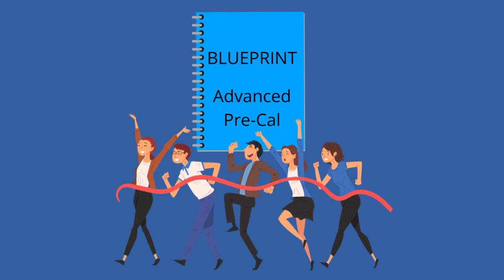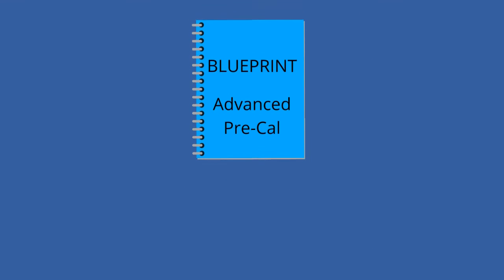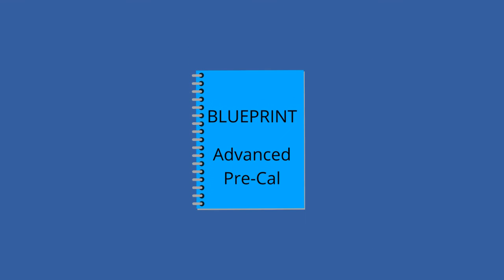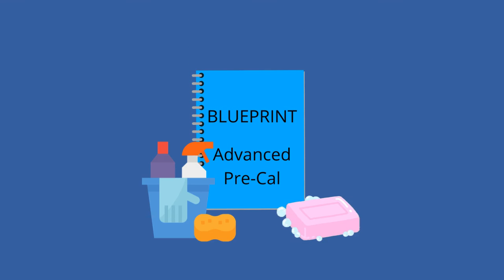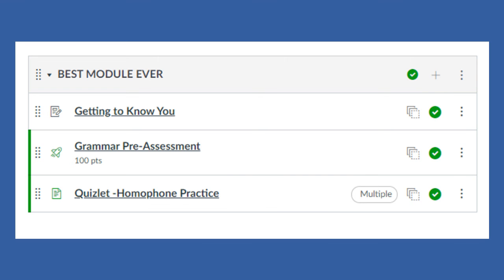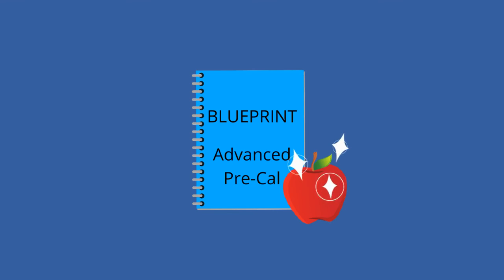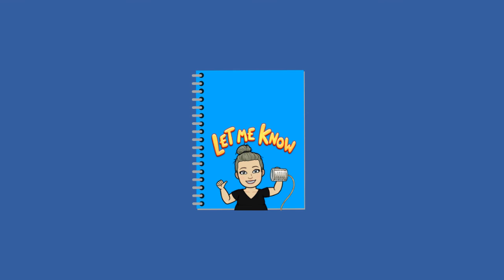Let's talk about the end of the year with blueprints. If you use a blueprint, then at the end of the year you will want to clean it up — get rid of stuff you don't want, hide or unpublish everything, and basically get it ready for the start of the next year. If you decide you no longer wish to use a blueprint or that you want to start with a clean slate, just talk to your DLC and they can make that happen for you.